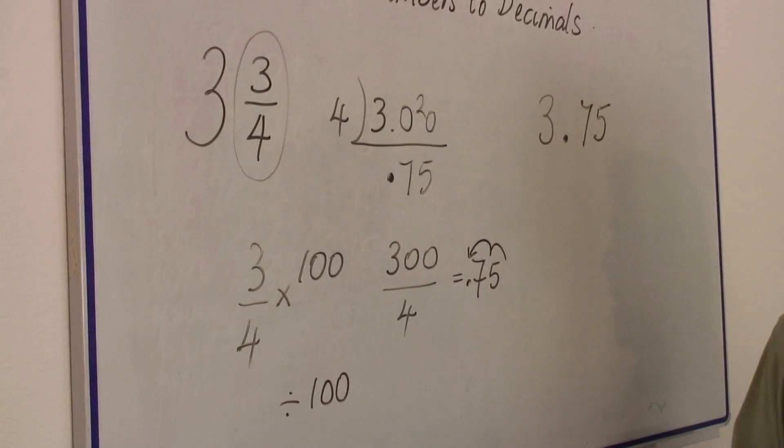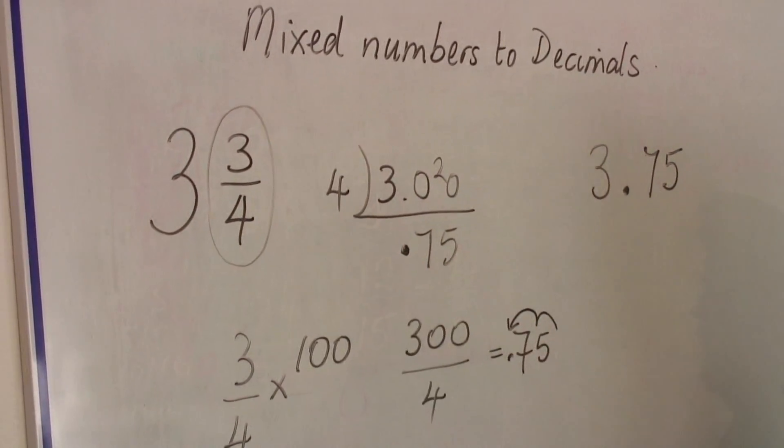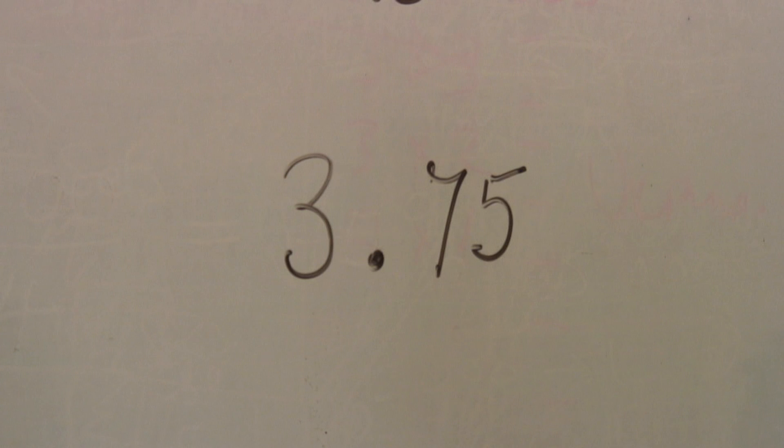So this is simply how to turn a mixed number with a whole number and a fraction into a decimal. Three and three quarters into three point seven five.